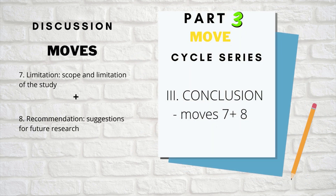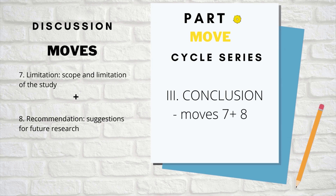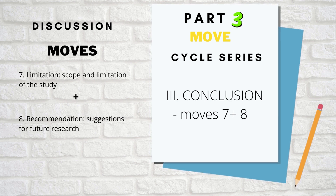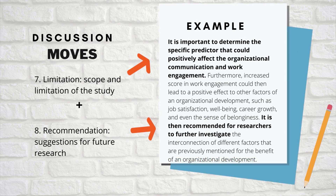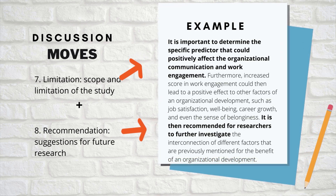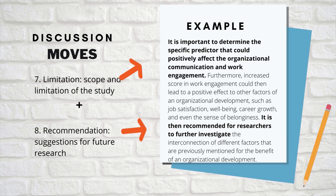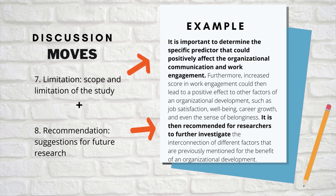The last combination is move seven plus eight: scope and limitation of the study plus the recommendation. For example: 'It is important to determine the specific predictor that could positively affect organizational communication and work engagement. Furthermore, increased score in work engagement could lead to a positive effect on other factors of organizational development such as job satisfaction, well-being, career growth, and even the sense of belongingness. It is then recommended for researchers to further investigate the interconnection of these different factors for the benefit of organizational development.'